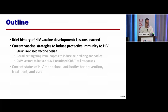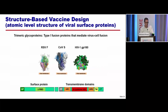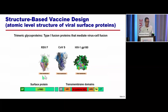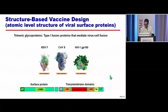Let me tell you what we're doing now, starting with structure-based vaccine design. This means using atomic-level structure of viral surface proteins to develop vaccines. RSV, SARS-CoV-2, and HIV all have envelope glycoproteins which are trimeric, called type 1 fusion proteins. These proteins mediate viral entry. They have a surface protein binding the receptor, a transmembrane protein with a fusion peptide, a transmembrane domain, and heptad repeats that allow the viral envelope to fuse with the membrane of the cell it's entering.